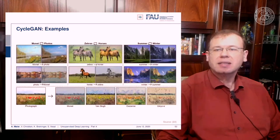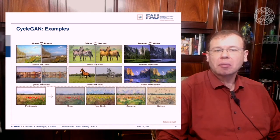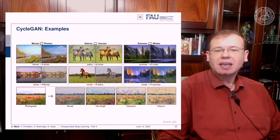I can tell you this has been widely applied. There are many examples: you can translate from Monet to photos, from zebras to horses, from summer to winter, and the respective inverse operations. If you couple this with more GANs and more cycle consistency losses, then you're even able to take one photograph and translate it to Monet, Van Gogh, and other artists and have them represent their specific style.